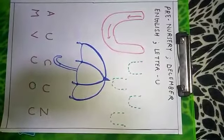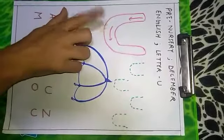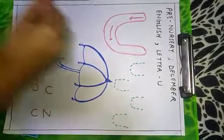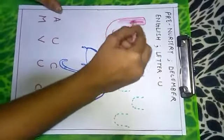So now, first of all, let's color the U. This is letter U. This is capital letter U.